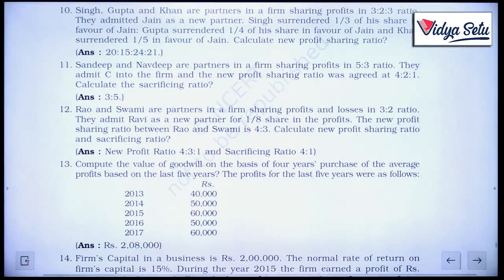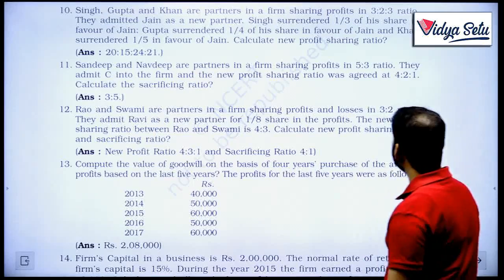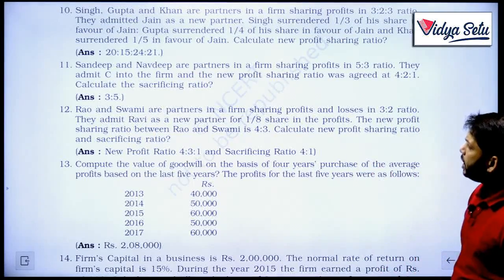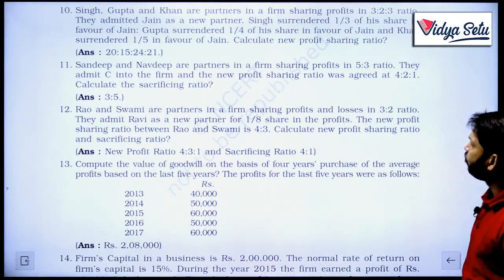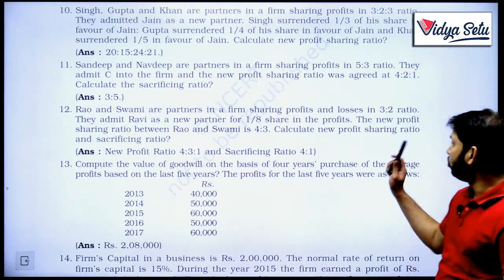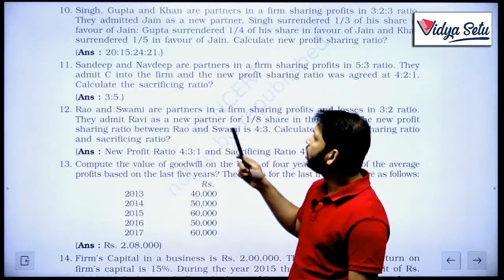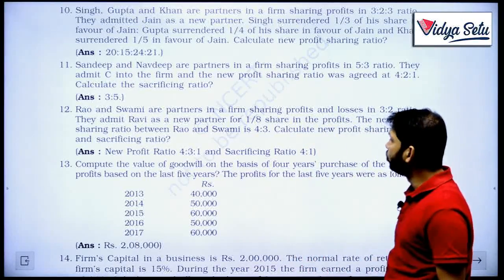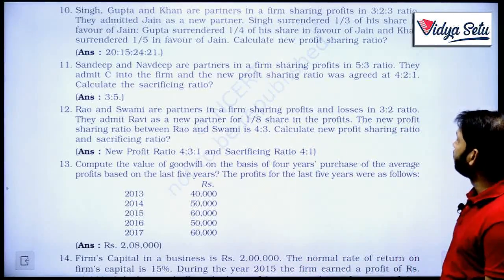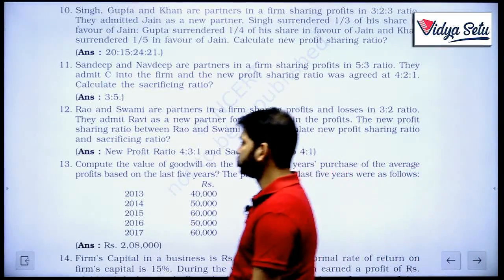Question number 12: Rao and Swami are partners in a firm sharing profits and losses in the ratio 3 is to 2. They admit Ravi as a new partner for 1 by 8 share in the profit. The new profit sharing ratio between Rao and Swami is 4 is to 3. Calculate the new profit sharing ratio. Very good question, let us check.